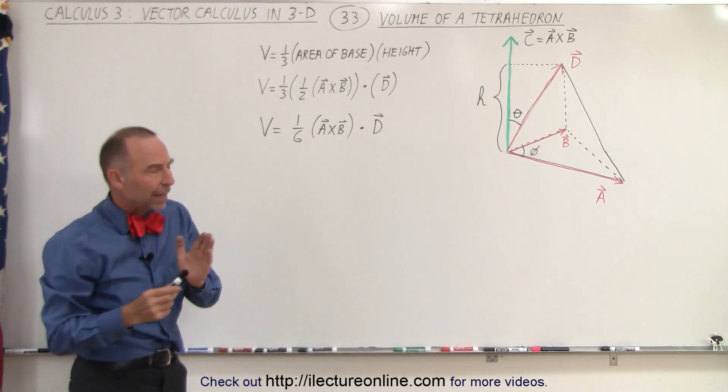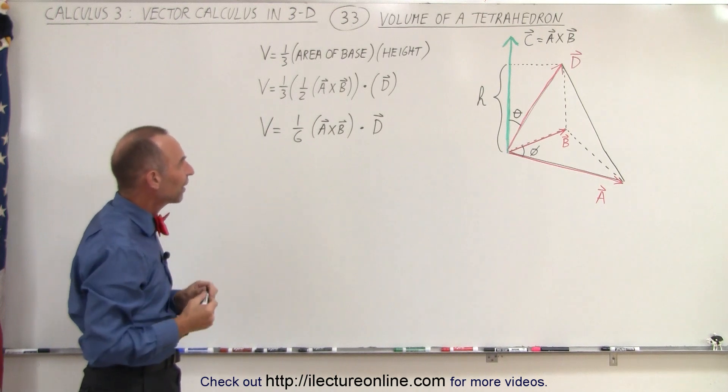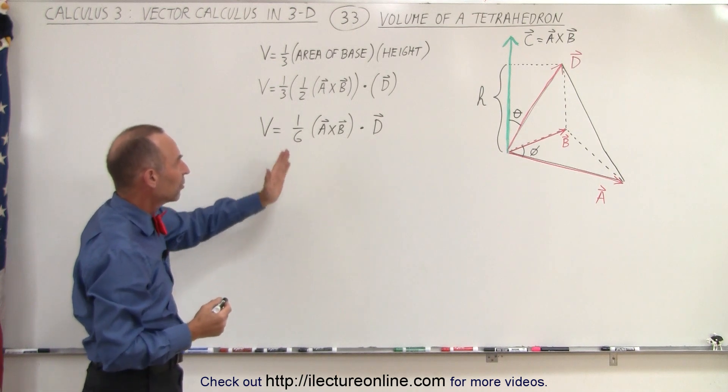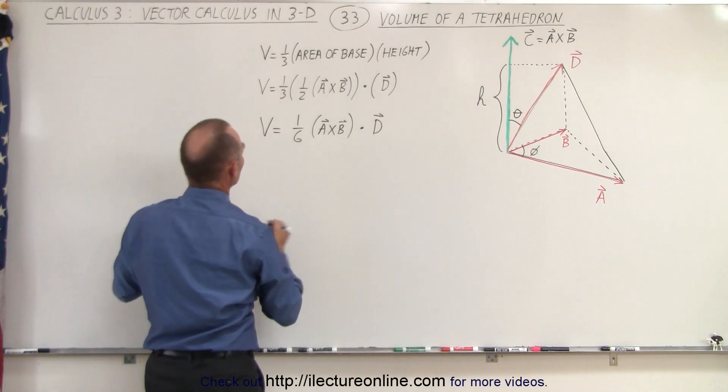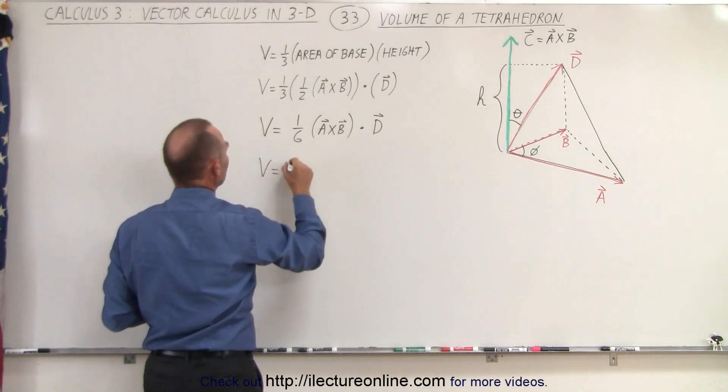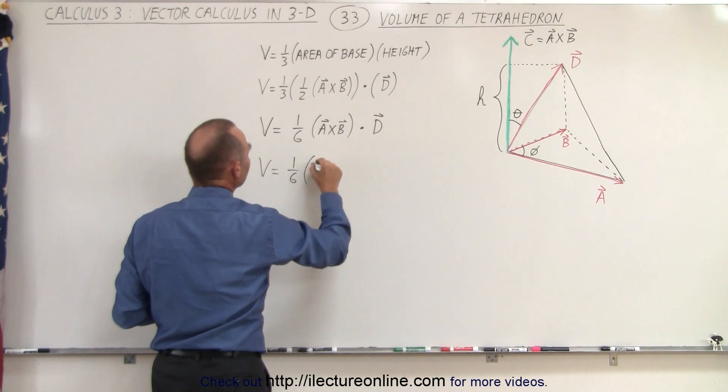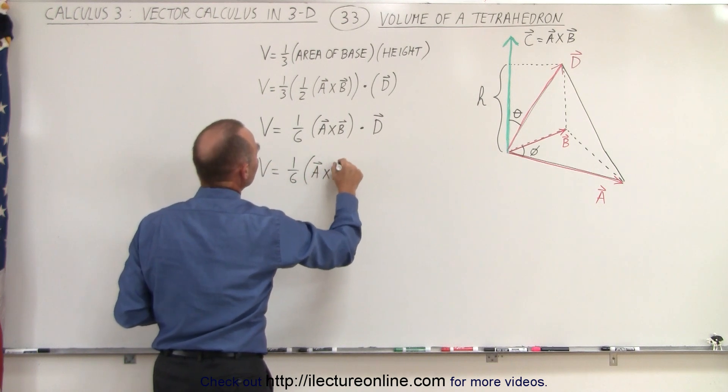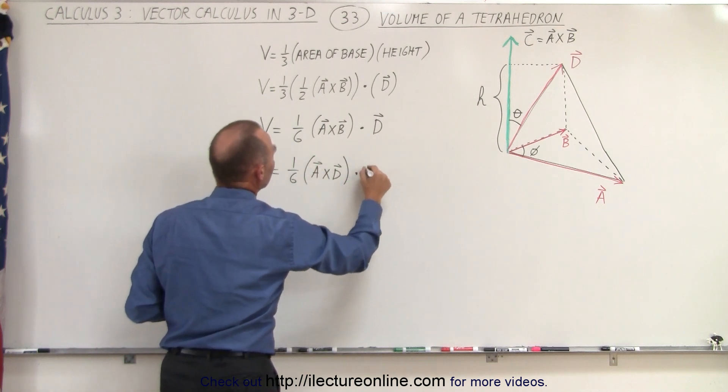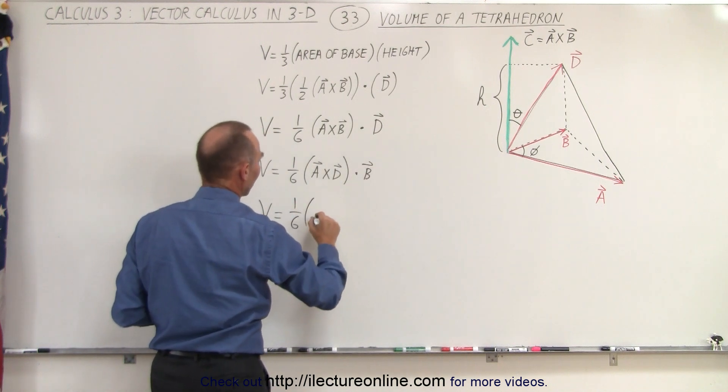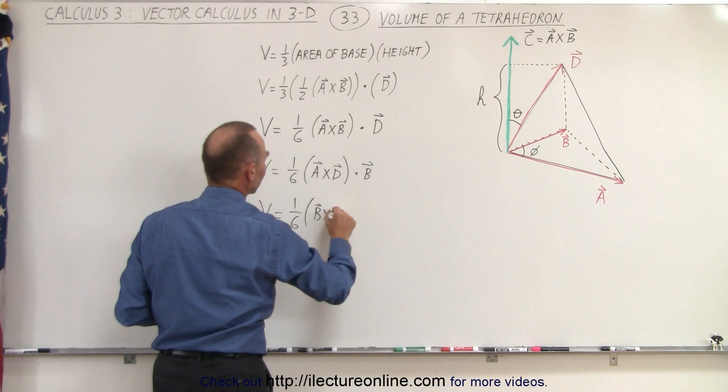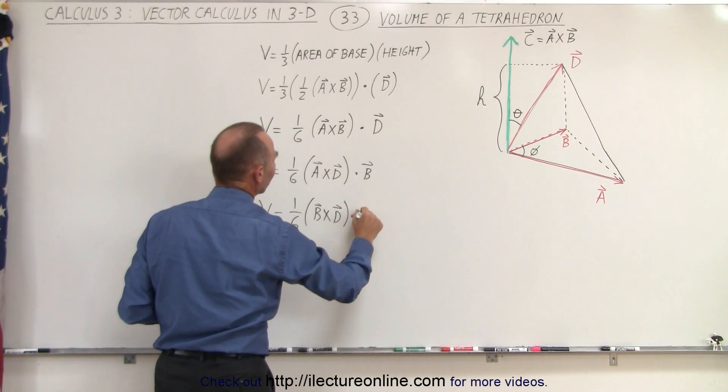Now, again, it doesn't matter what the order of the vectors are. We can also write this D dot A cross B, doesn't make any difference. In other words, we can say that the volume is also equal to one-sixth times A cross D dotted with the vector B. And we can say that the volume is also equal to one-sixth times B cross D dotted with the vector A.